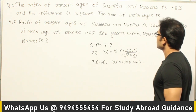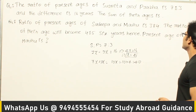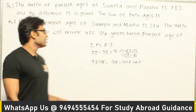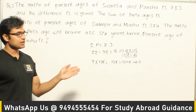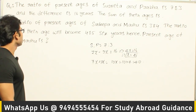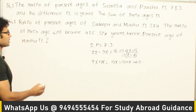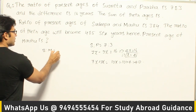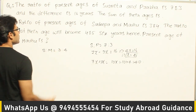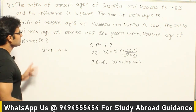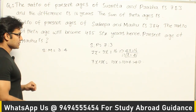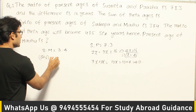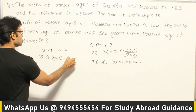The ratio of present age of Sudipa and Madhu is 3 is to 4. Then the ratio of their ages will be 4 is to 5, six years hence. Six years hence means six years later. Then the present age of Madhu is. So they are saying if Sudipa's age is S and Madhu's age is M, then S is to M equal to 3 is to 4. And after 6 years the ratio of ages is going to be 4 is to 5.